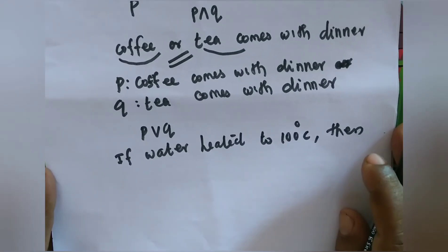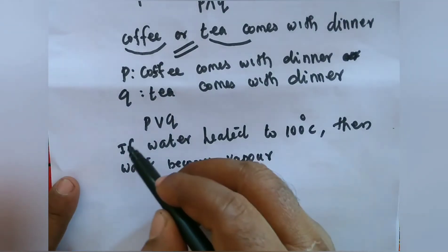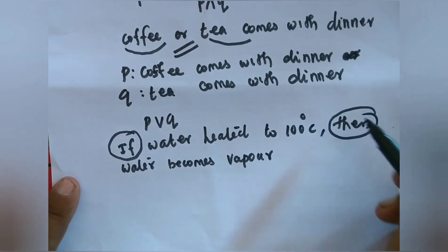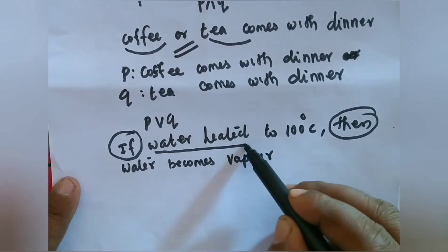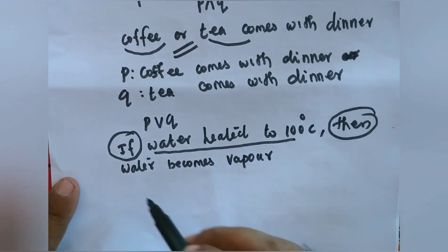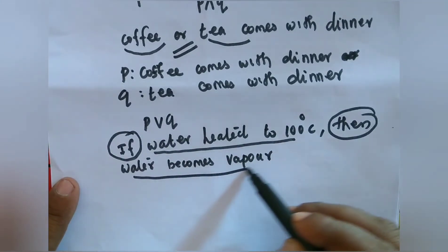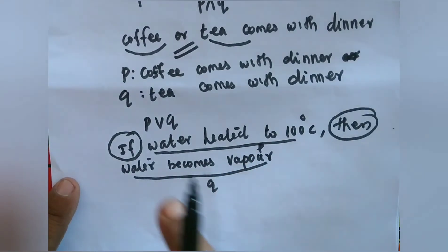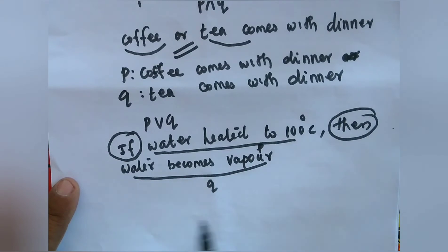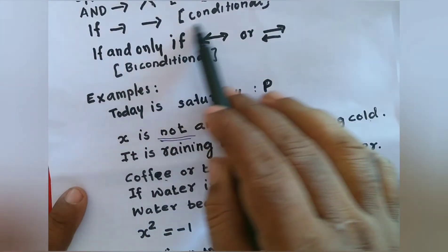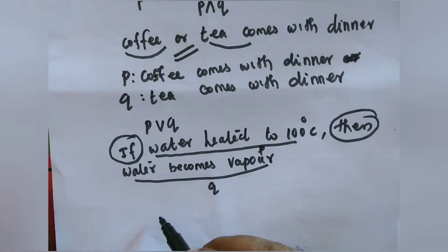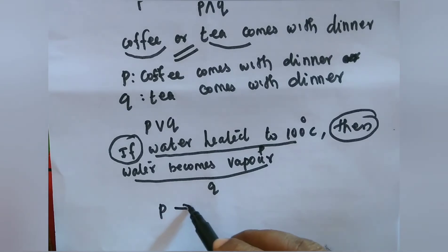Next example: 'water heated to 100 degrees Celsius, then water becomes vapor.' Here the sentence is connected with 'if...then', so we take P as 'water is heated to 100 degrees Celsius' and Q as 'water becomes vapor'. Since the sentence contains 'if', we use the conditional statement, and the given sentence is represented as P → Q.